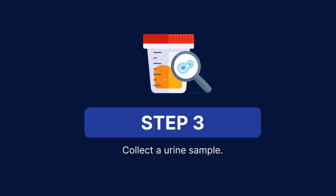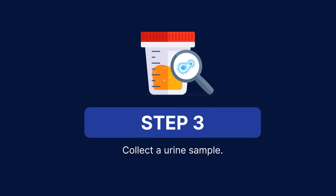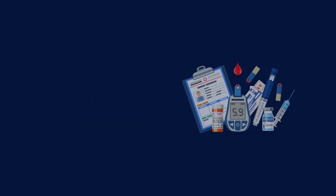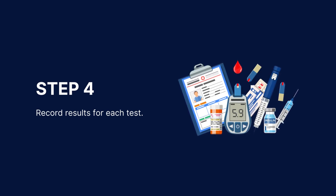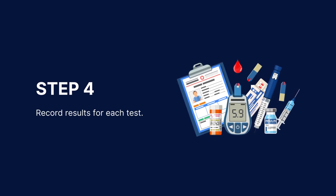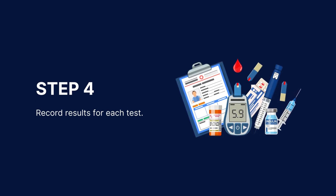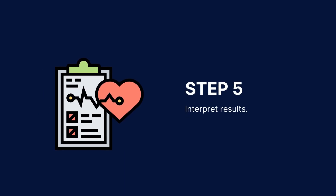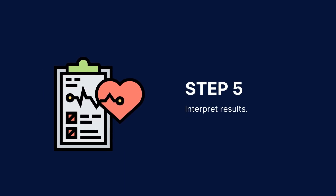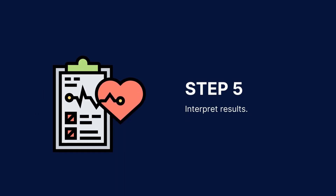Collect a clean catch midstream urine sample in a sterile container for the urinalysis test. Record the results of each test in the appropriate column of the template. Lastly, interpret the results to evaluate the function of the kidneys and diagnose any kidney damage or disease.